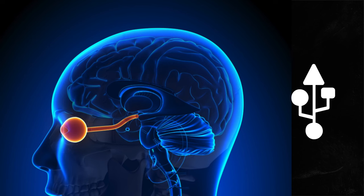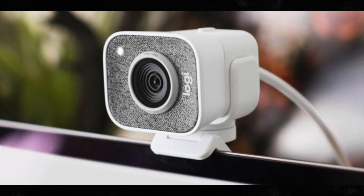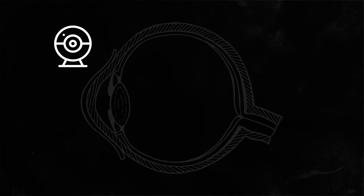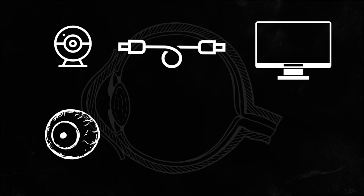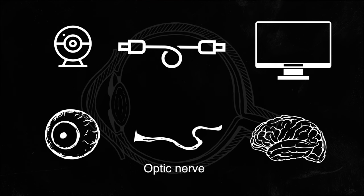The optic nerve is the USB cable that connects your eye to the brain. Imagine your computer with a webcam. The webcam captures light and signals to the computer via a USB cord about what it sees. Now imagine the same setup with your eyes and brain. The eye captures light and signals to the brain via the optic nerve about what it sees.